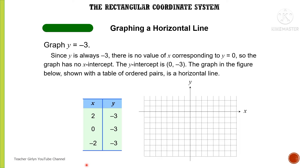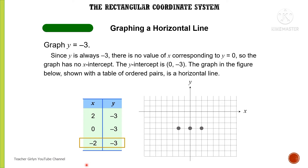The Y-intercept is (0, -3). The graph, shown with the table of ordered pairs, is a horizontal line. For instance, the ordered pairs (2, -3), (0, -3), and (-2, -3) form a horizontal line. As you observe, there is no point touching the X-Axis. Therefore, if in the equation X has no value, the graph is always a horizontal line.